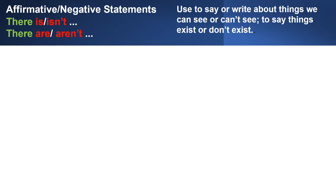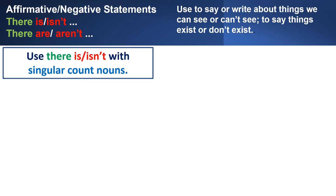We use there is and there are to say or write about things we can see or can't see, to say things exist or don't exist. With singular count nouns — singular means one — we use there is or there isn't.